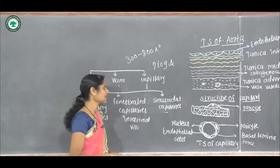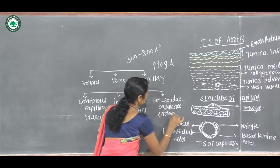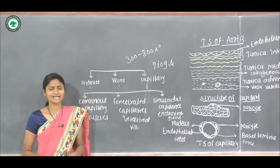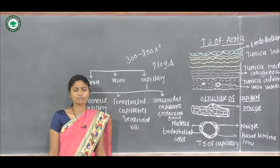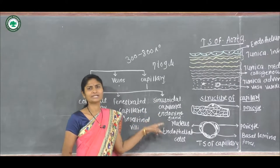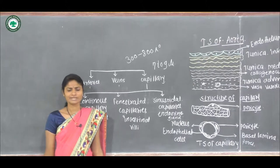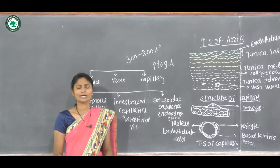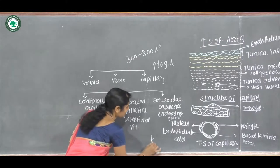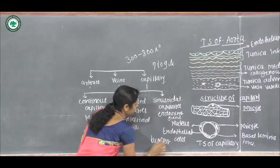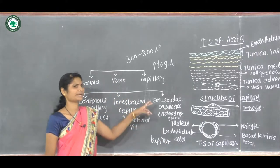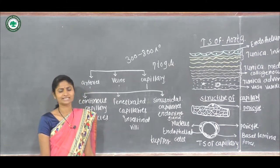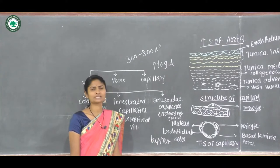The next type is sinusoidal capillaries. These capillaries occur in the endocrine gland and mainly have a large diameter, with endothelial cells having pores. Examples include the liver and spleen, where large sinusoidal spaces are present. The lining of this sinusoidal space contains phagocytic cells, also called Kupffer cells, in the sinusoidal capillaries.